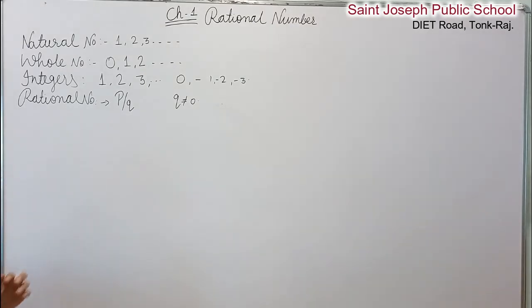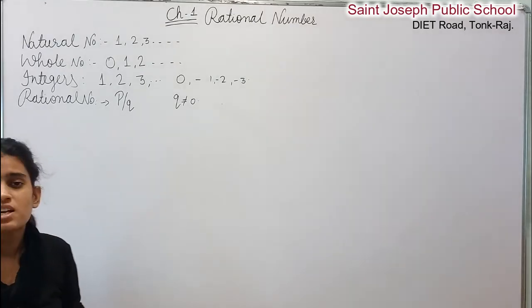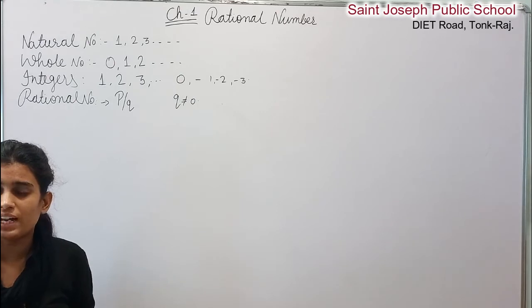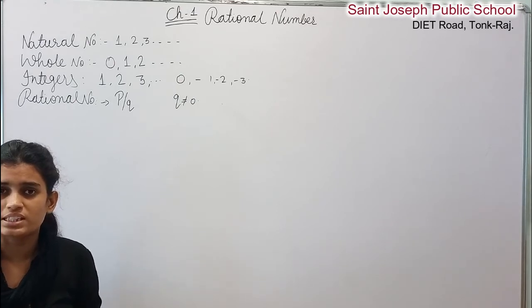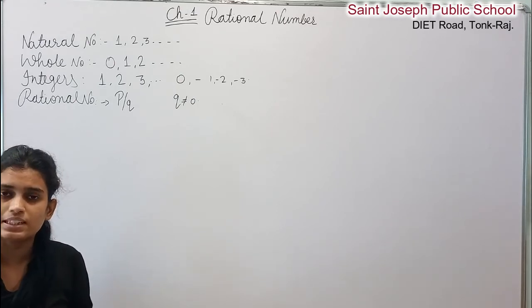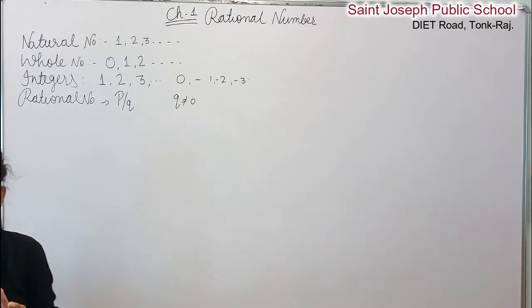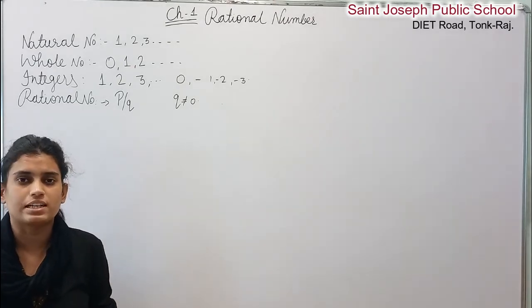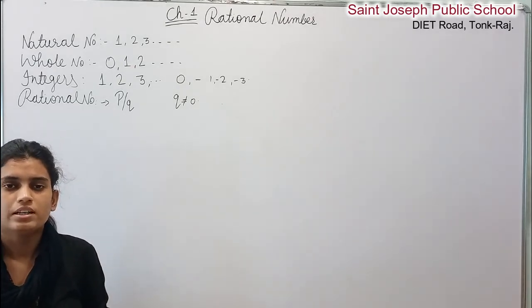Now we talk about integers. Integers are positive and negative numbers — like -1, -2, -3, 0, 1, 2, 3. Now we talk about rational numbers. What is a rational number?